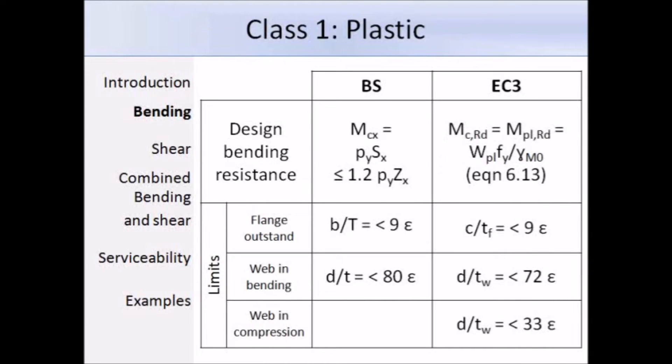Eurocode 3 describes a section as being class 1 if it can form a plastic hinge with the rotation capacity required from plastic analysis without reduction of resistance. Here in this table I've included the class 1 limits and the relevant equation for the design bending resistance for both BS 5950 and Eurocode 3 so that you can compare the two. Overall the class limits are not that different. You should note that Eurocode 3 uses TF and TW for the flange and web thicknesses rather than capital T and small t used in BS 5950. We can see that Eurocode 3 uses the plastic design resistance as denoted by the subscript PL, and when broken down the equation is not that dissimilar to the one used in BS 5950. In 5950 we have PY the yield strength, and in Eurocode 3 we have FY the yield strength. In 5950 we have the plastic modulus SX, and in Eurocode 3 the plastic modulus WPL, so really not much has changed except the notation.